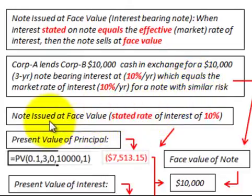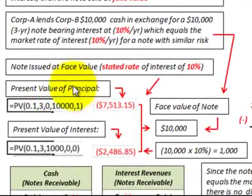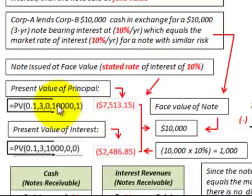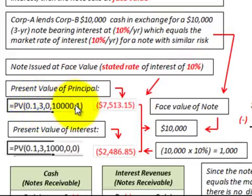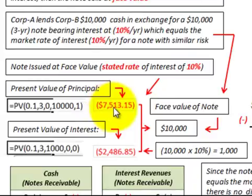Let's look at our calculations for a note issued at its face value with a stated rate of interest of 10%. For the present value of the principal, we have the note for $10,000 discounted back for three years at the 10% interest rate, at the beginning of the period. The present value of that $10,000 principal amount equals $7,513.